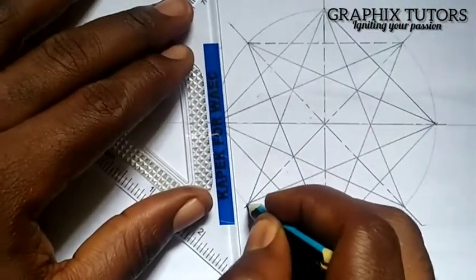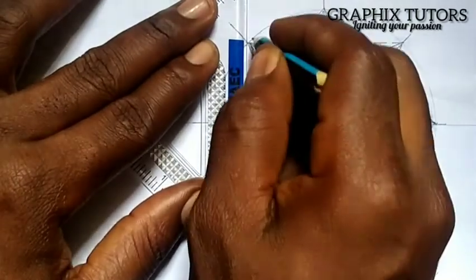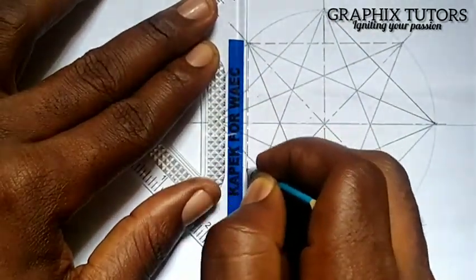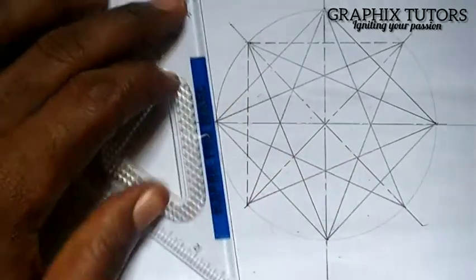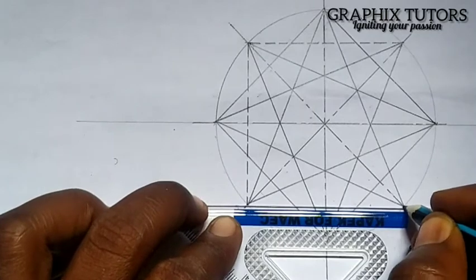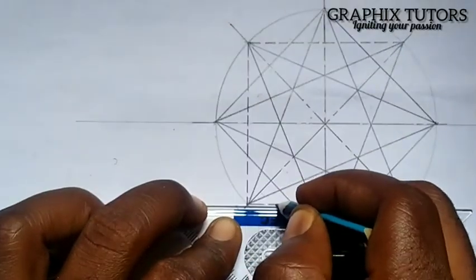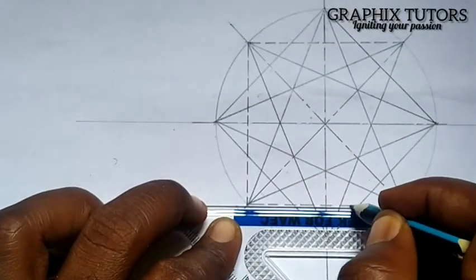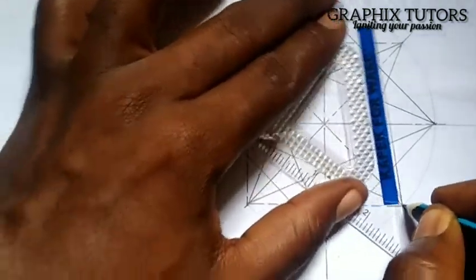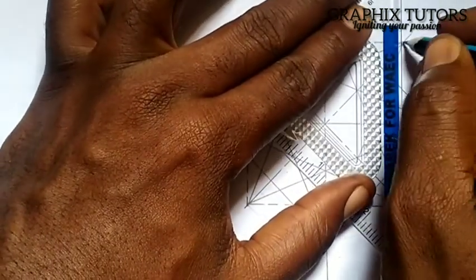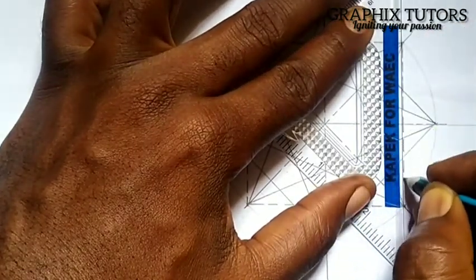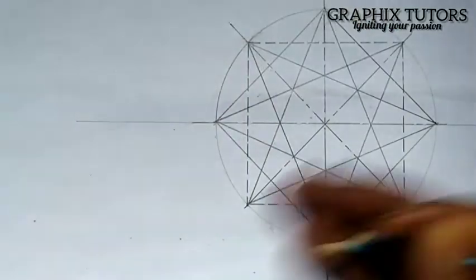Then from here also, the same thing. Short, short, short. Uniformly distributed too. Then here also to the same thing. Short, short. So this is what we call how you do your hidden line.